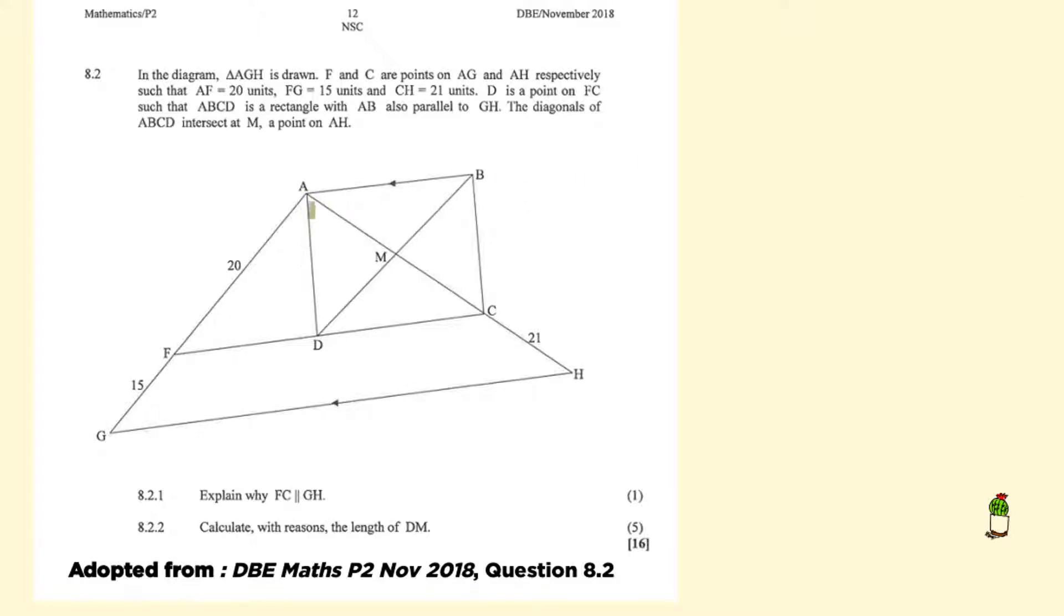So we have ABCD over here, which is a rectangle, with AB also parallel to GH. The diagonals of ABCD intersect at M.